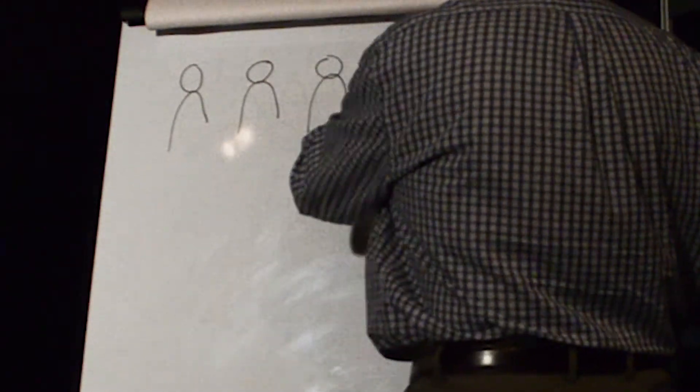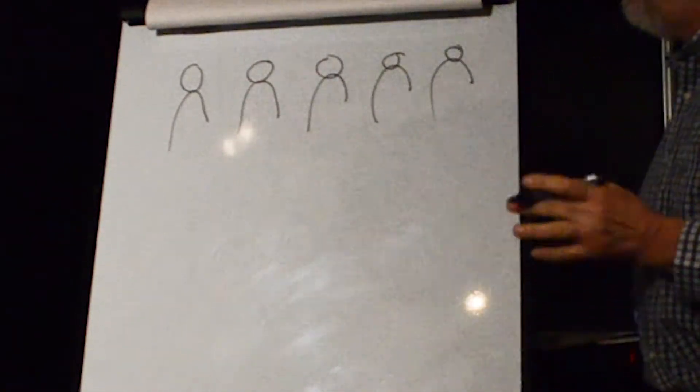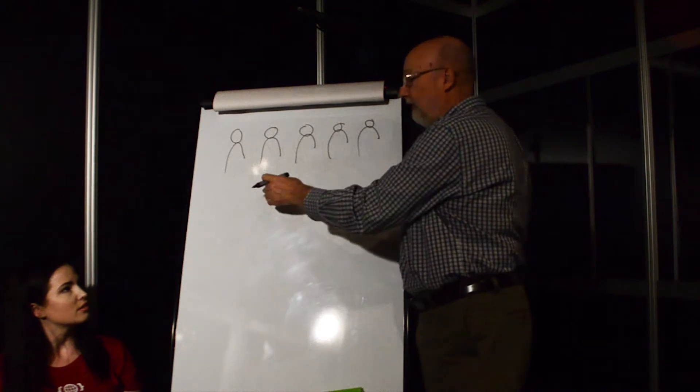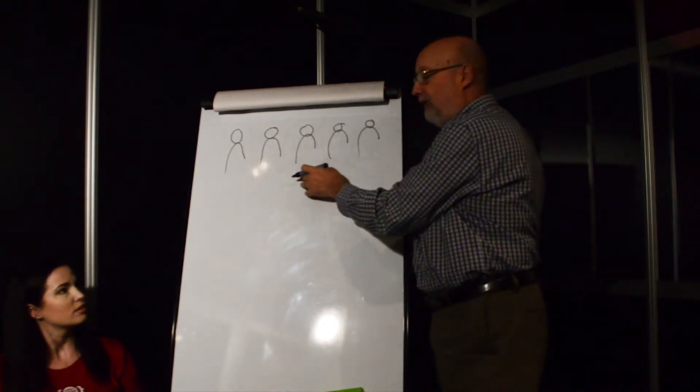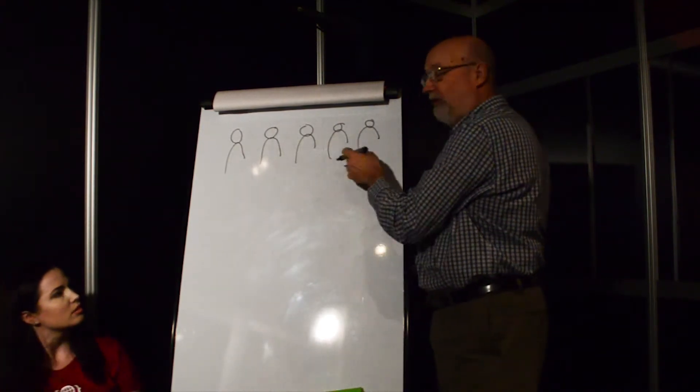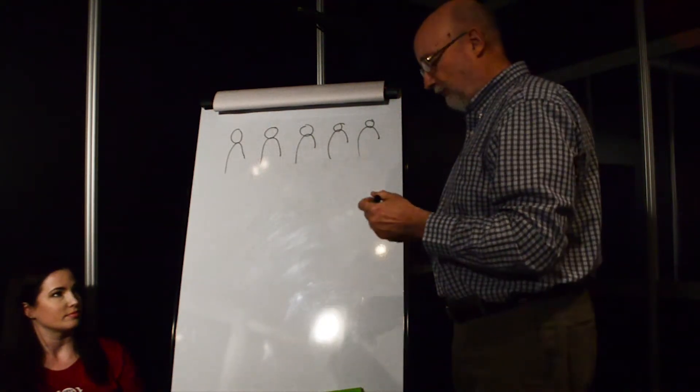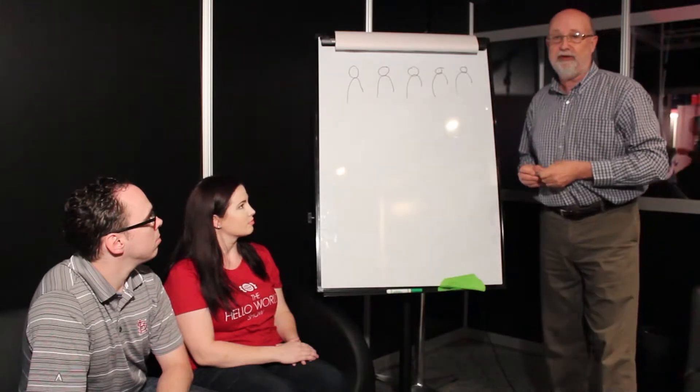I'm going to just draw some people here so we can kind of see the idea. Each one of these people is necessary for the software we're writing. We might have the product expert or product owner, a tester, a coder, a back-end coder, a front-end coder, a designer, a database expert, whatever is there.